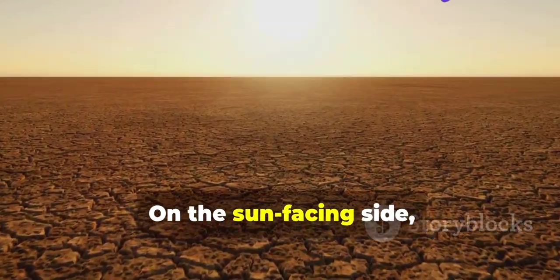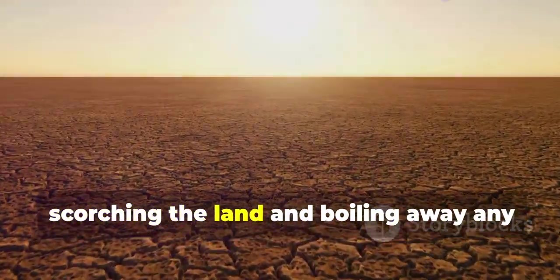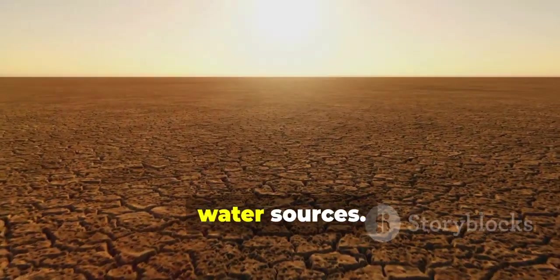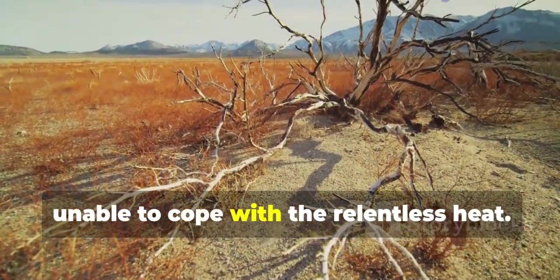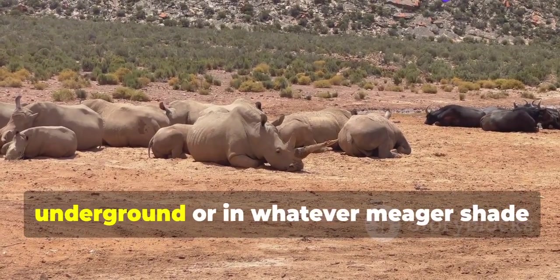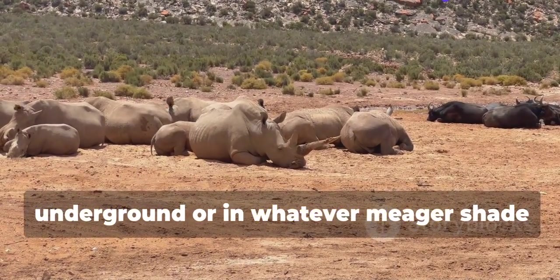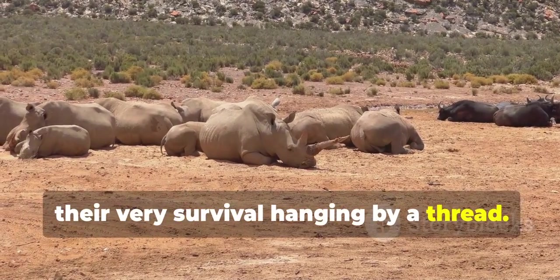On the sun-facing side, temperatures would soar to unimaginable heights, scorching the land and boiling away any water sources. Plants would wither and die, unable to cope with the relentless heat. Animals would be forced to seek refuge underground or in whatever meager shade they could find, their very survival hanging by a thread.